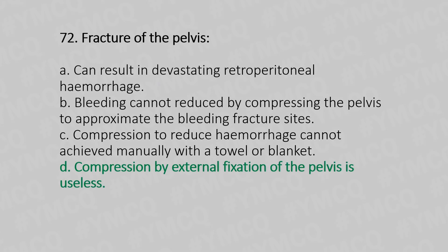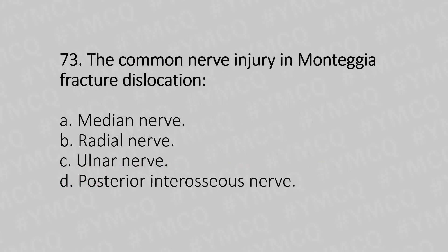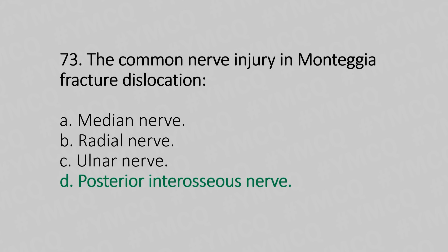Now let's move to question number 73. The common nerve injury in Monteggia fracture-dislocation: Option A, Median nerve; Option B, Radial nerve; Option C, Ulnar nerve; Option D, Posterior interosseous nerve. And the answer is Option D, Posterior interosseous nerve.